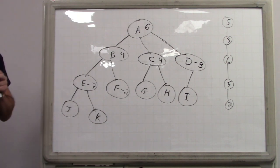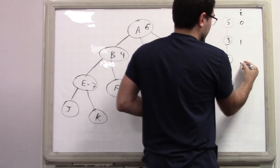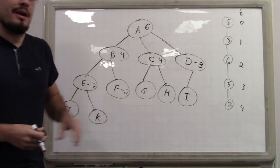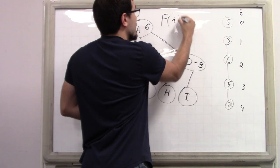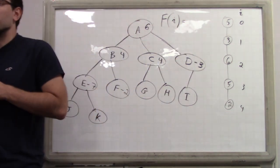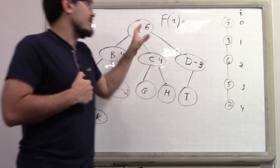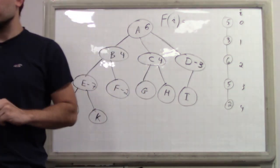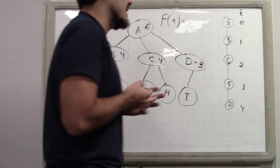If you recall, the solution to the robber problem was pretty easy. We gave each house an index i, and let f(i) be the maximum value the robber can attain, assuming they're at index i in their decision making and they are allowed to rob the current house — they have not robbed the previous house.